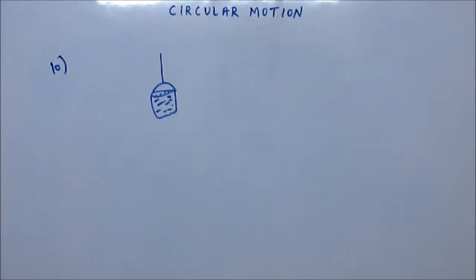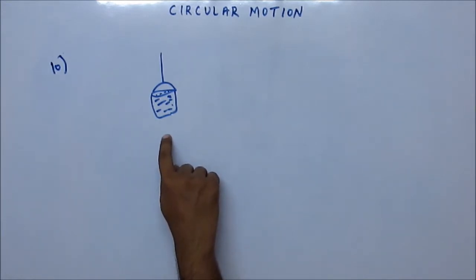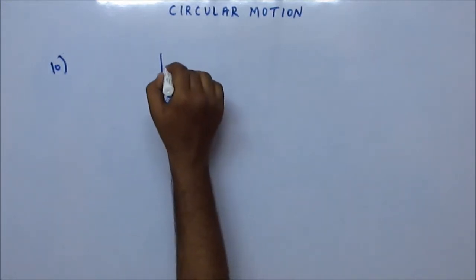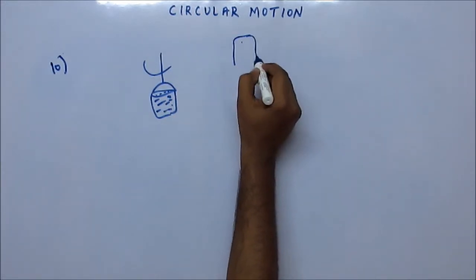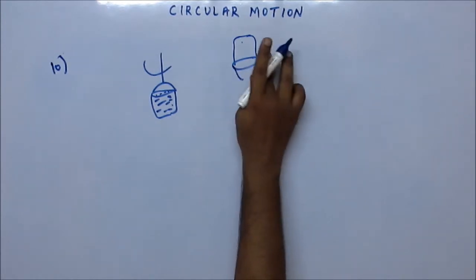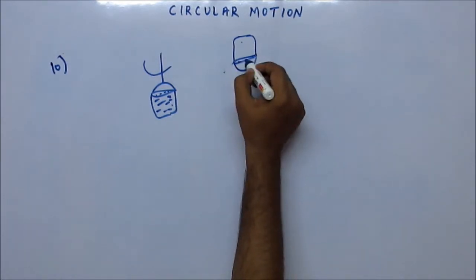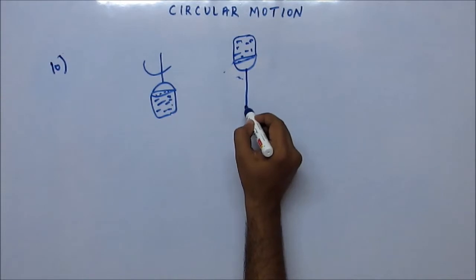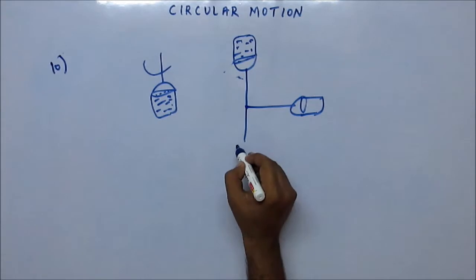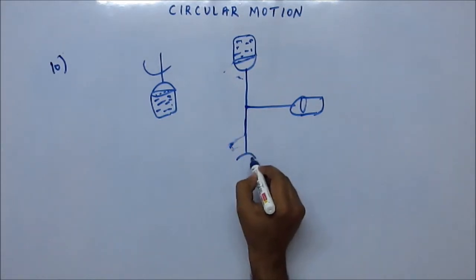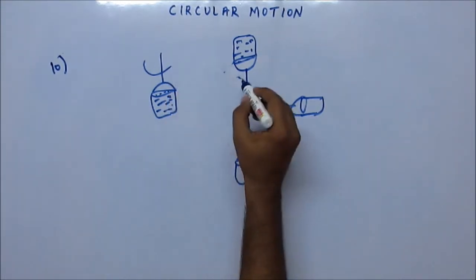The bucket of water is whirled in a vertical circle with a string attached to it. Now, the water does not fall down even when the bucket is inverted at the top. When you start rotating it, the bucket comes to the top with water filled in it, but the water does not fall.